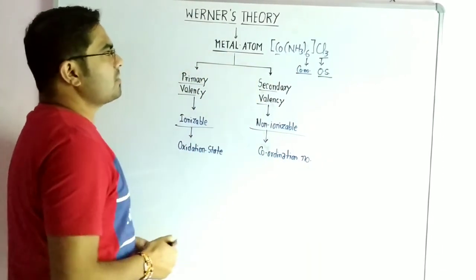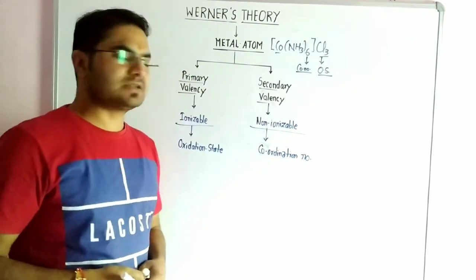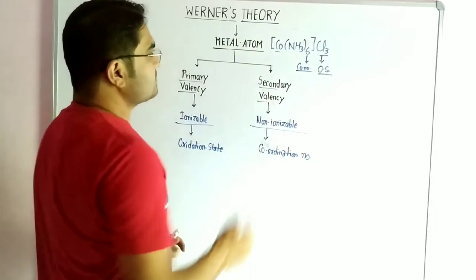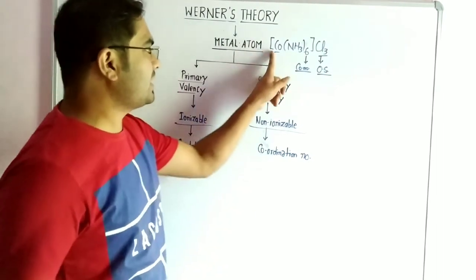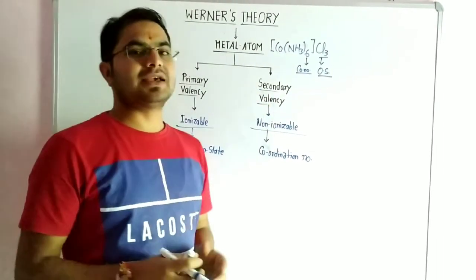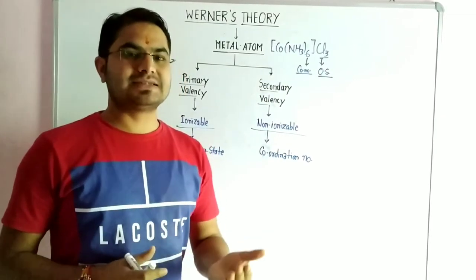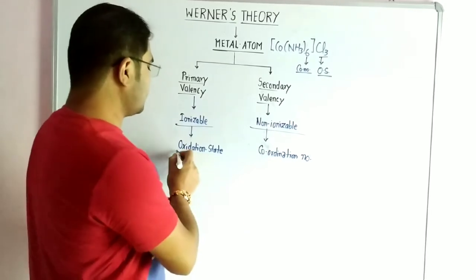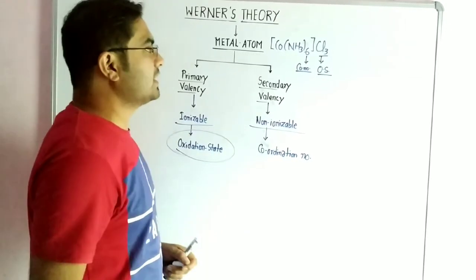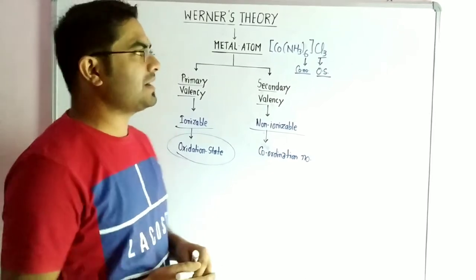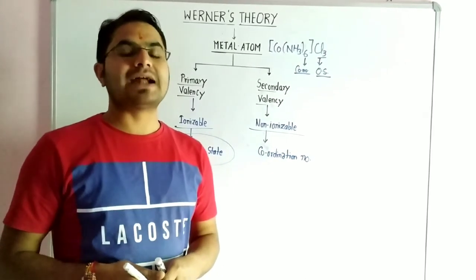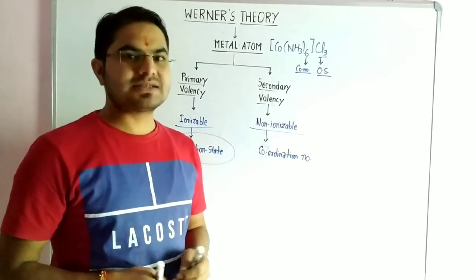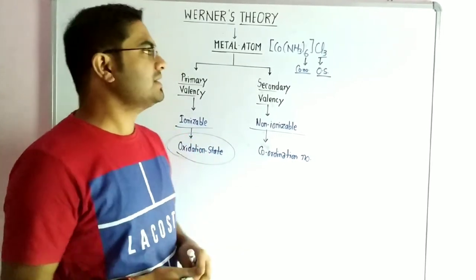Werner's theory postulates that the metal atom tends to satisfy both valencies — primary and secondary — of the central metal atom. The oxidation state is calculated from the primary valency, which depends on whether the ligands attached are neutral or negatively charged.